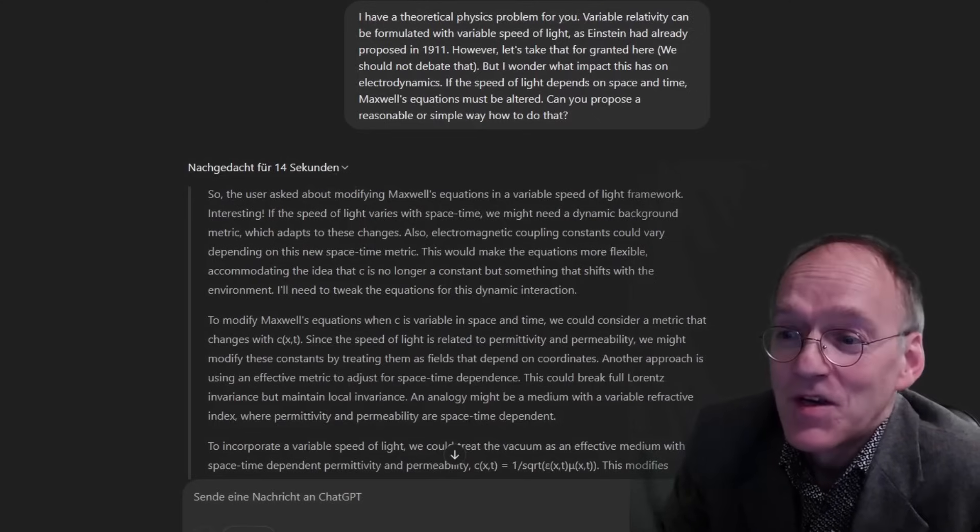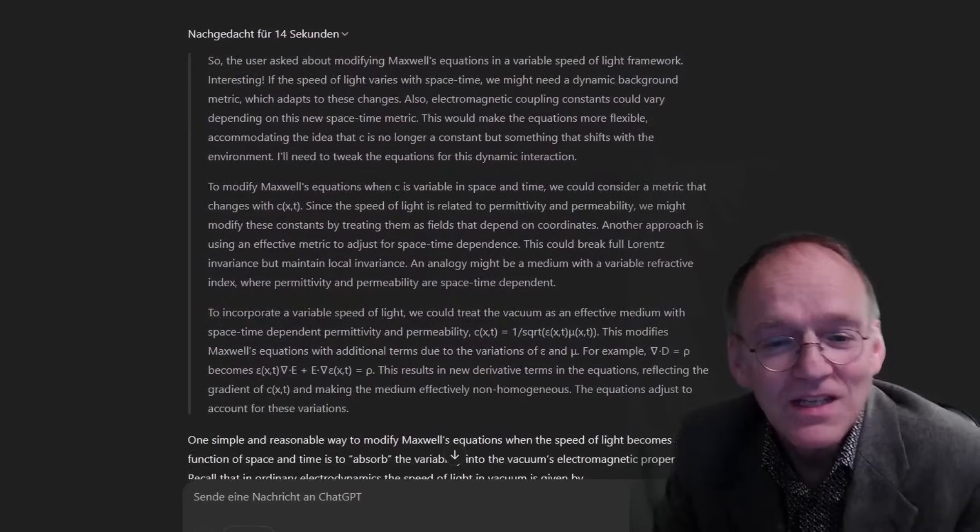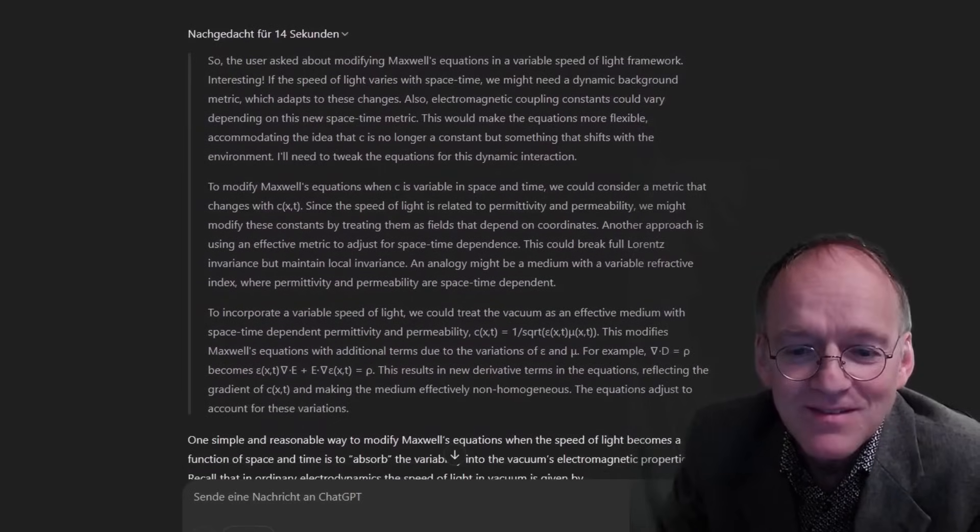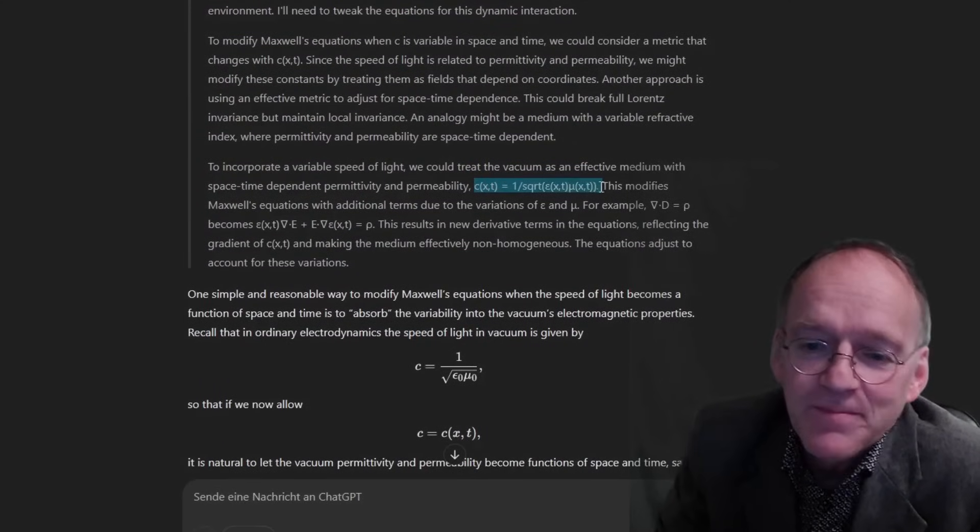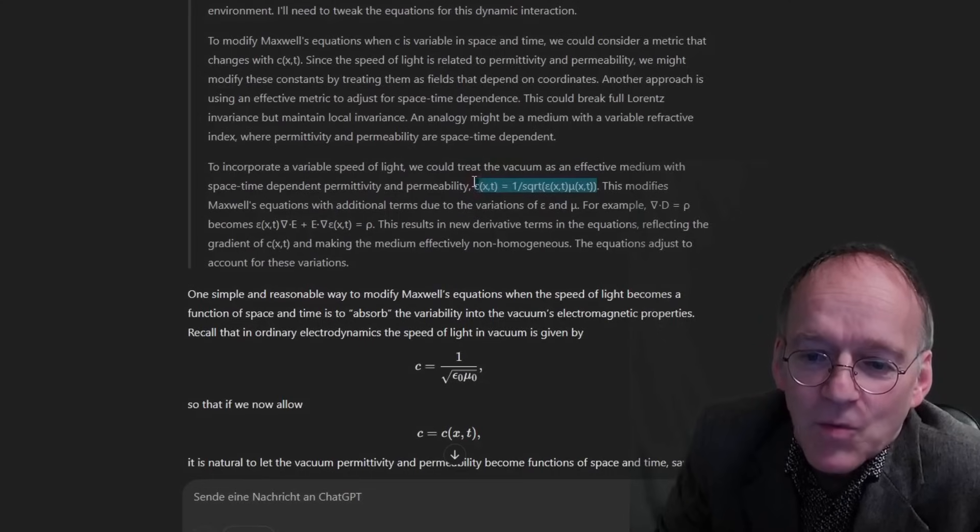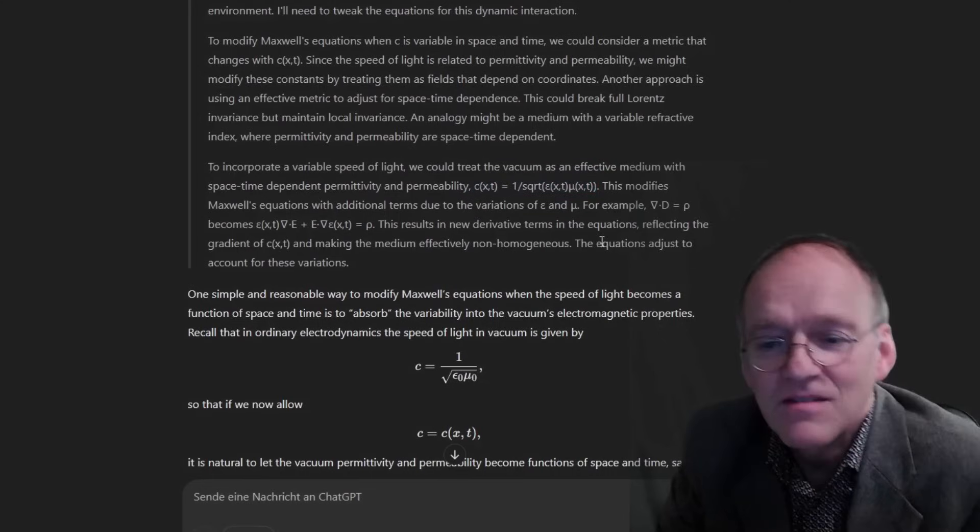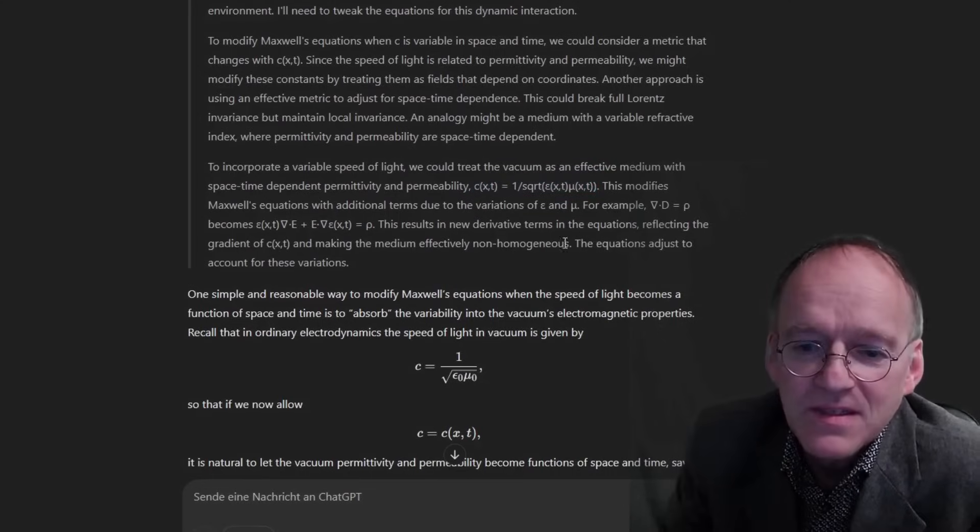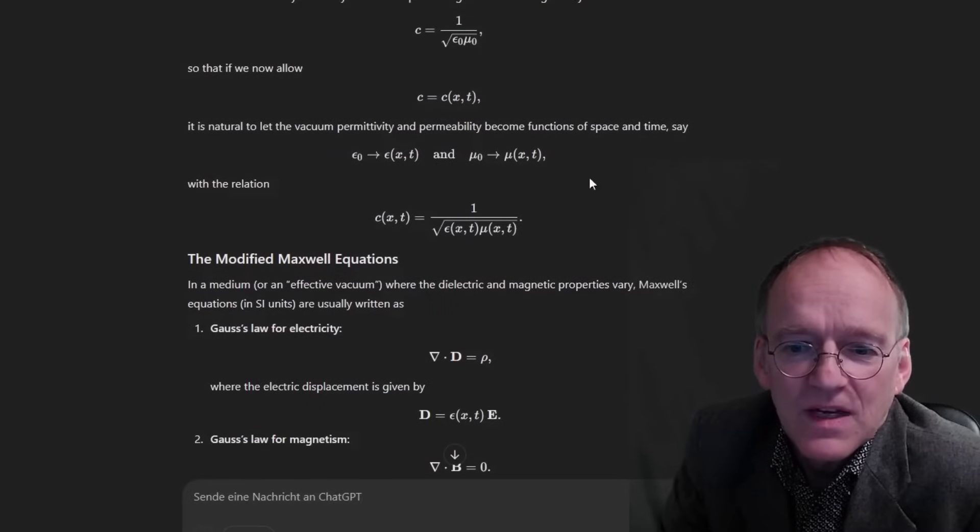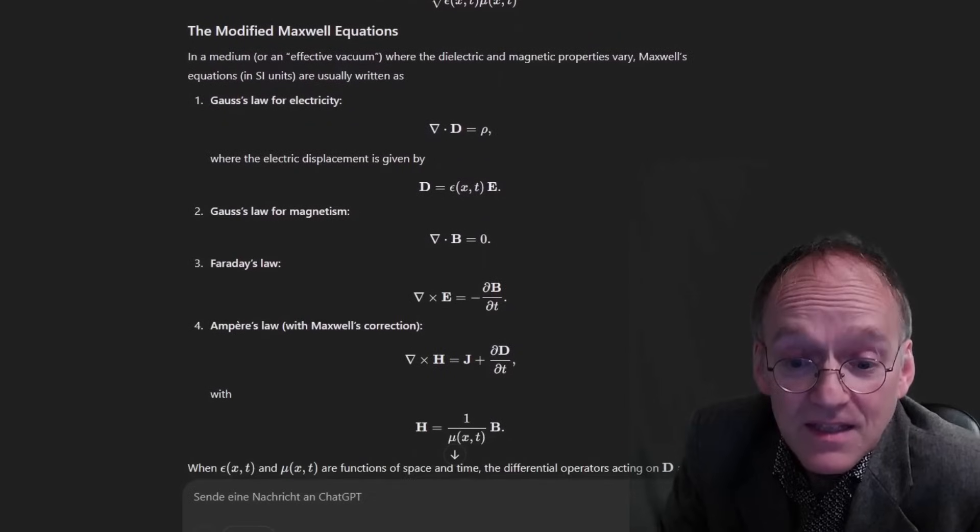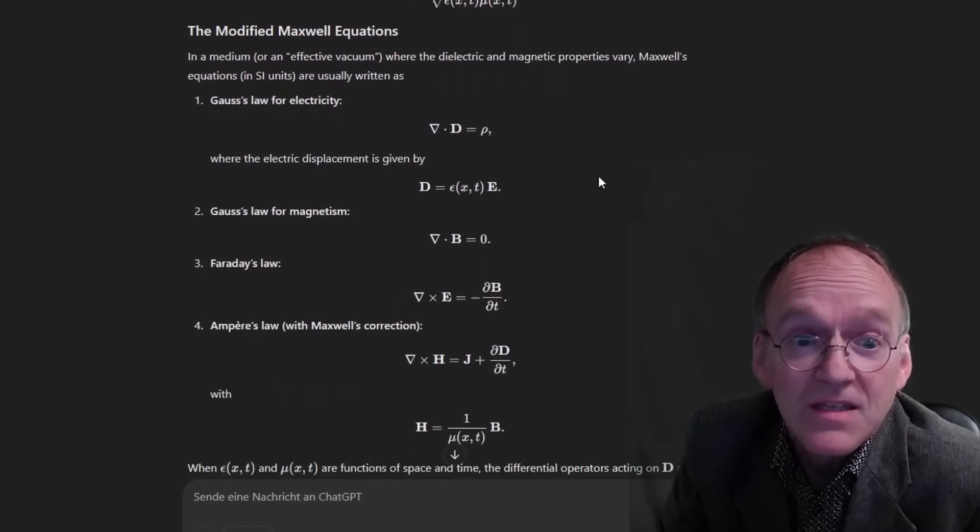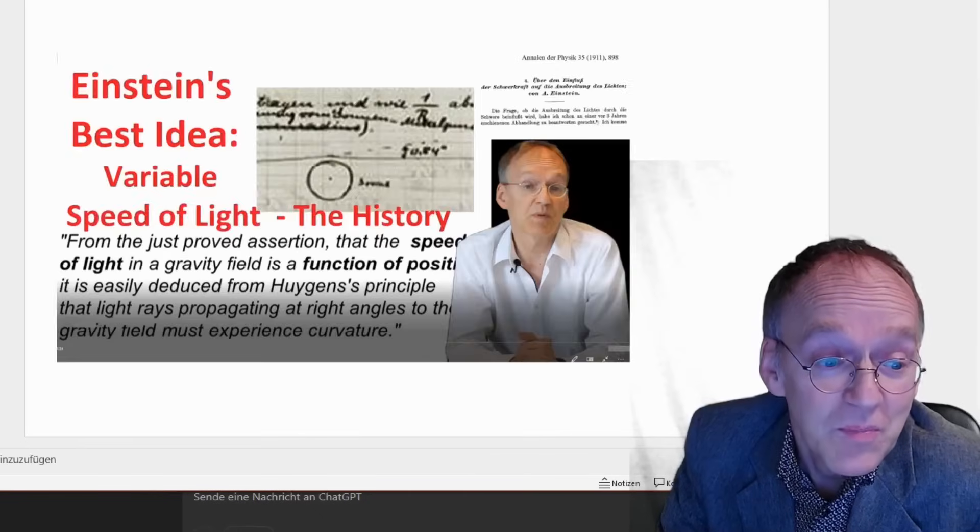Now ChatGPT thinks for 14 seconds and really grasps the problem, sees what's to be done, and formulates the speed of light with the electric and magnetic constants - everything is time and space dependent. He just writes down correctly the equations, thinks about it, and then he comes up with indeed a solution I also proposed.